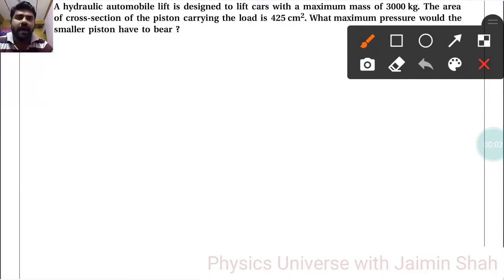Now the question is: A hydraulic automobile lift is designed to lift cars with a maximum mass of 3000 kg. So here we have mass equals 3000 kg.